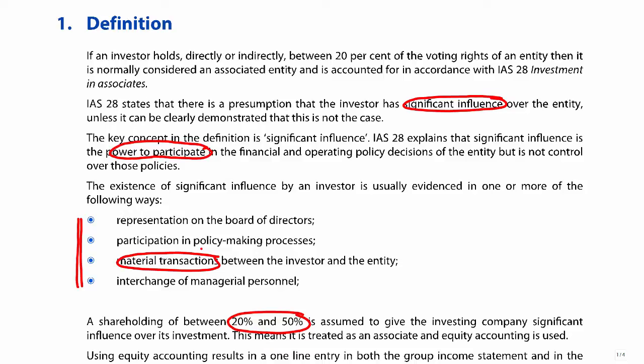Most of the time, if you see between 20% and 50%, that shows that we have influence. But do be on the lookout, particularly for non-computational style questions, where you're asked to decide if you have influence based upon other aspects. Commit to memory those four indicators: representation on the board, participation in the policymaking process, material transactions between yourself as investor and the entity, and interchange of managerial personnel.